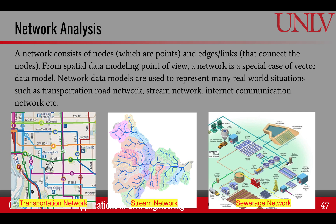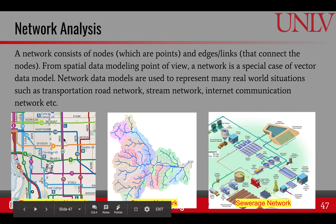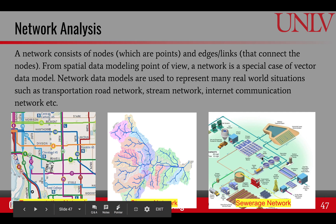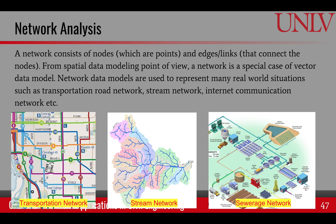Network data models are very useful to represent many real-life situations. For example, a transportation network, where the nodes are the intersections and lines are the roads that connect those intersections. Here's an example of a stream network, where streams form the lines and wherever they join another stream — the confluence of two streams — is a node. Another example in an urban environment would be a sewage network or the internet communication network. All of these are examples of networks and they require special analysis in GIS.